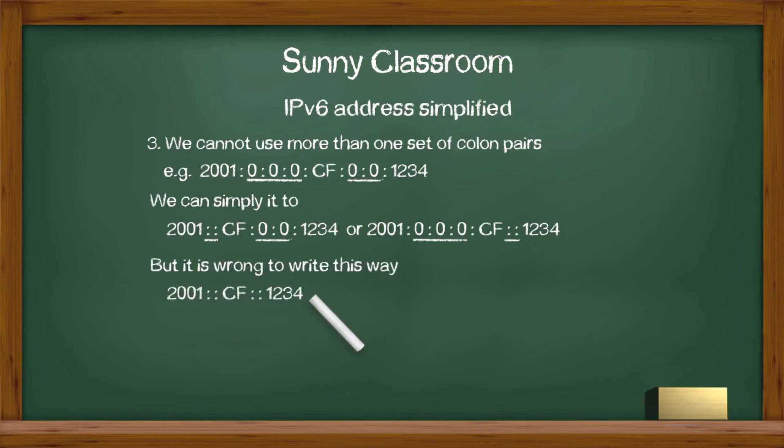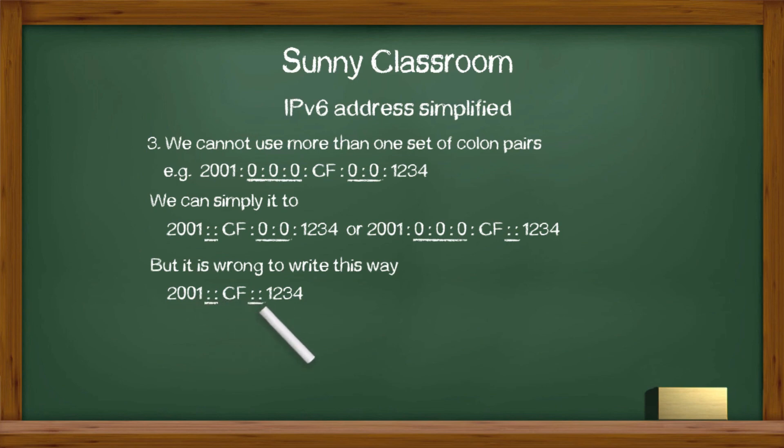The result is an address like 2001, appearing with colon CF, appearing with colon 1234.